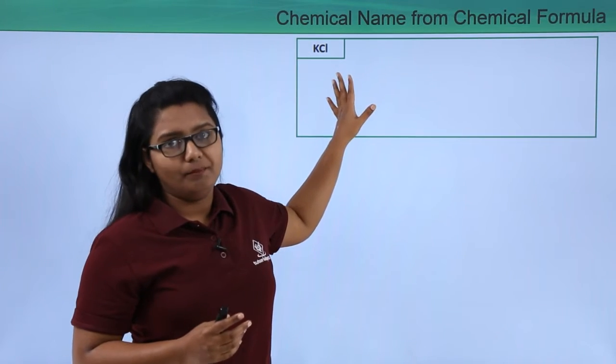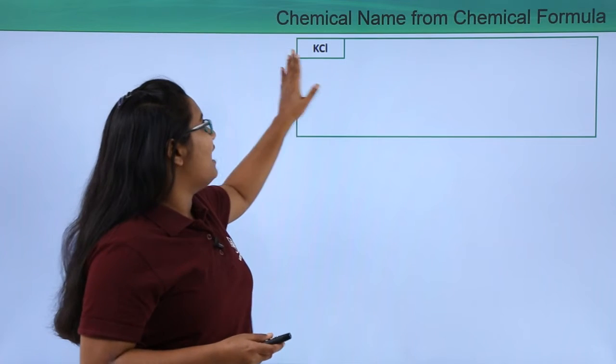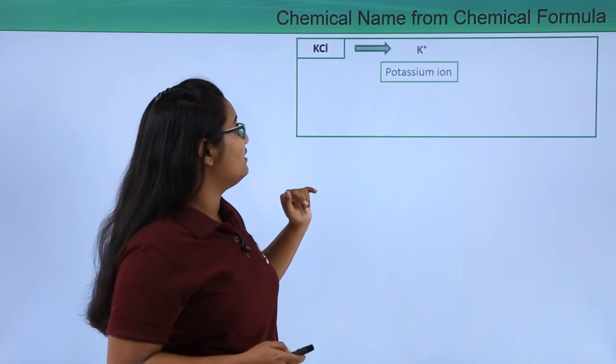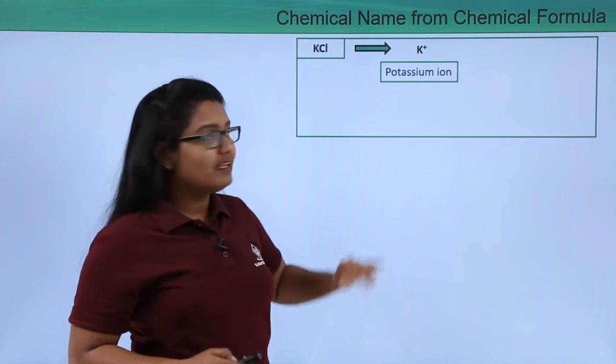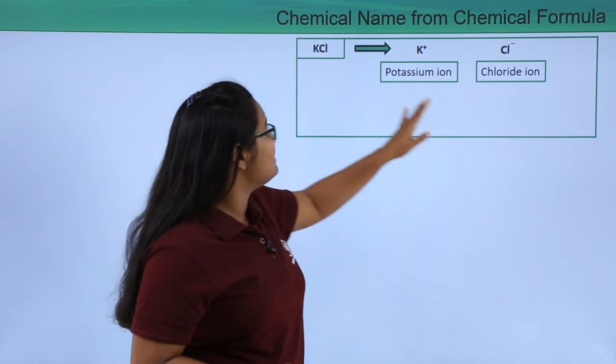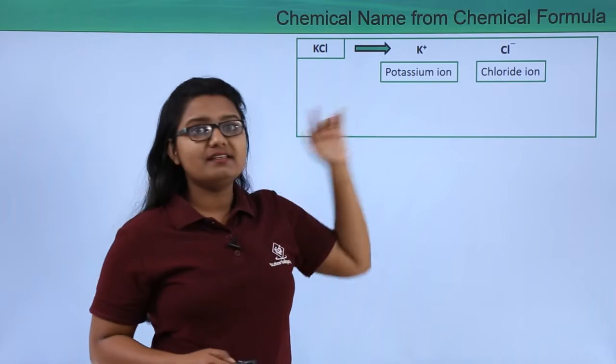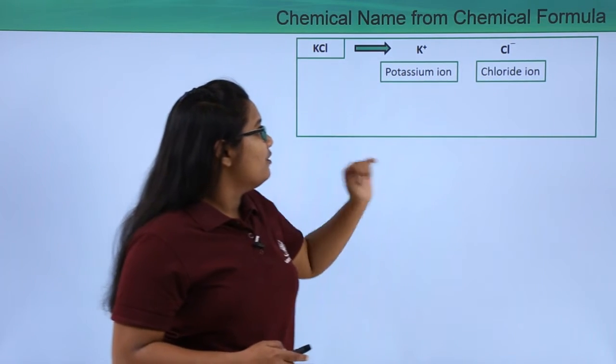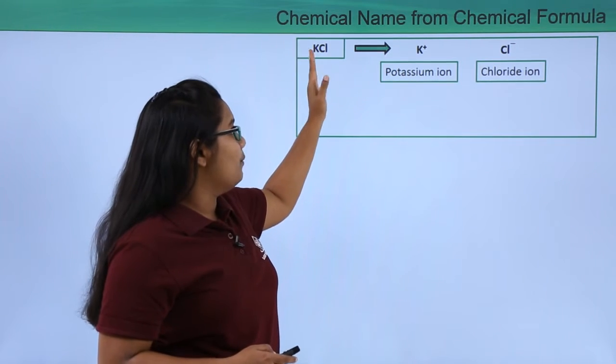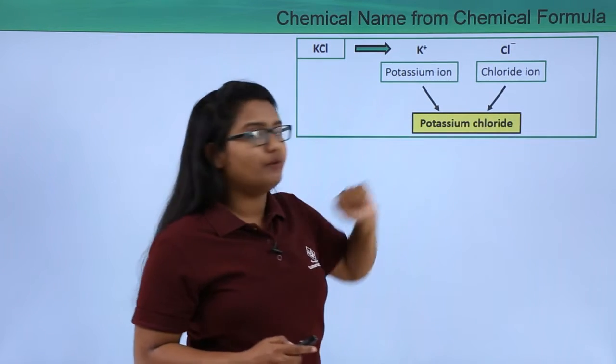So here on having a closer look I could figure out that it must be having K+ that is potassium ion, and also it must be having Cl- which is the chloride ion. Now on combining these two names we can get the whole name of this particular compound as potassium chloride.